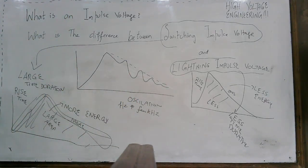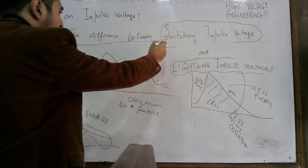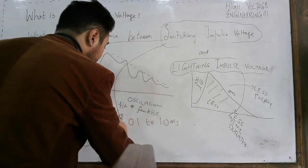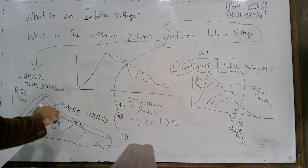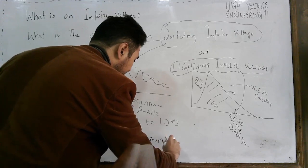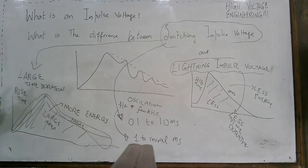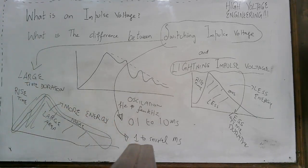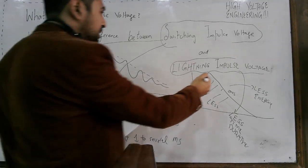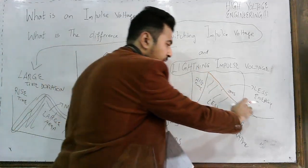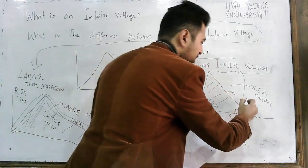One more important parameter is the wave front time. For a switching impulse waveform, the wave front time is typically around 0.1 to 10 milliseconds, and the wave tail time is around 1 to several milliseconds. So the switching impulse voltage has a high wave front time as well as a greater wave tail time. On the other hand, for the lightning impulse voltage, the rise time is around 1 to 2 microseconds only, and the wave tail time is up to 50 microseconds.